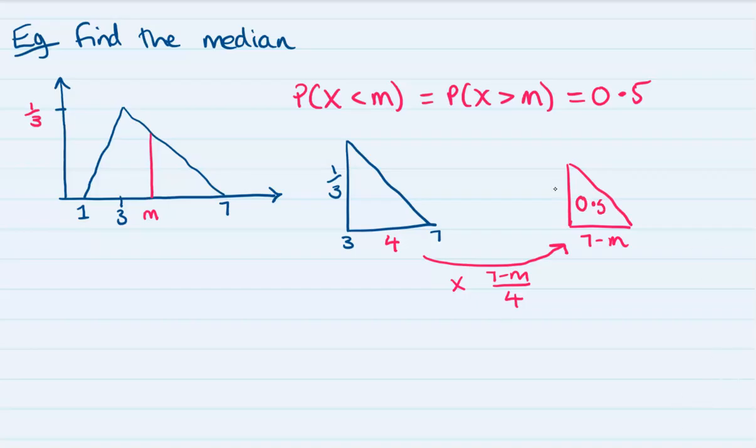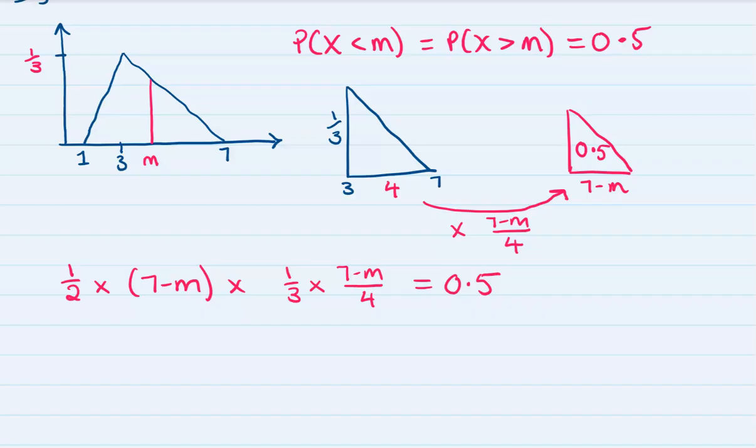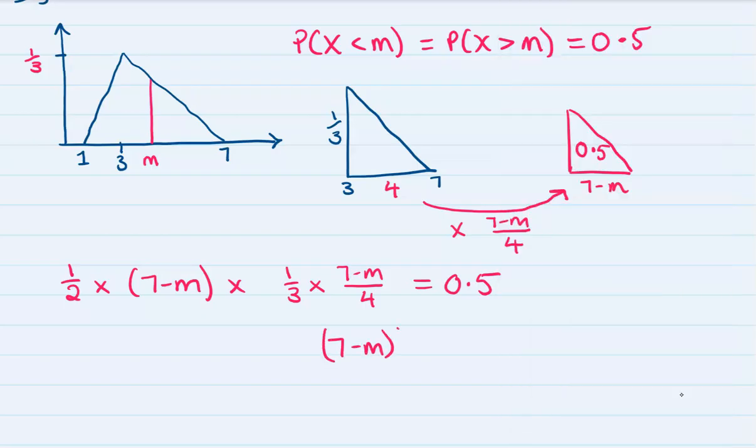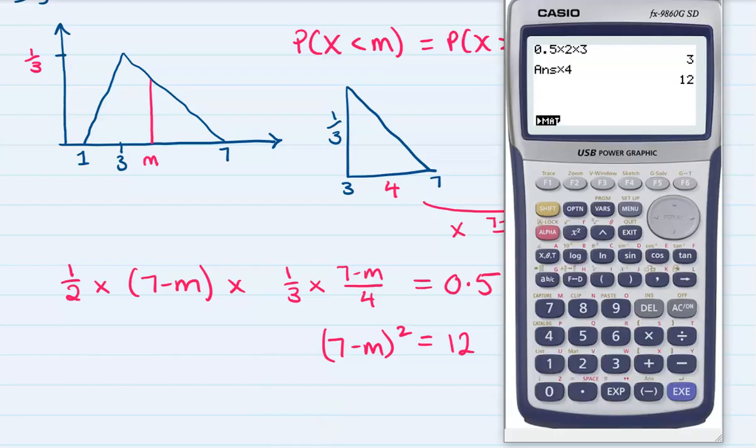We've got that scale factor of 7 minus m over 4, and we'll apply that same thing to make the height. The area of our triangle must be 0.5. If we go through half times base times height, we get 0.5. We've got that one-third from here being multiplied by the scale factor 7 minus m over 4, and then we simply solve for m. You can put this into your equation solver on the graphics calculator or work through the steps algebraically. 0.5 times 2 times 3, that'll get us 7 minus m squared divided by 4. Times by the 4, so 7 minus m squared will equal 12. Square root that, and then m will be 3.54. Well done.